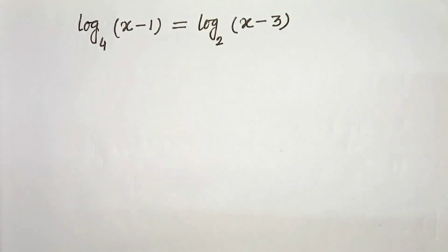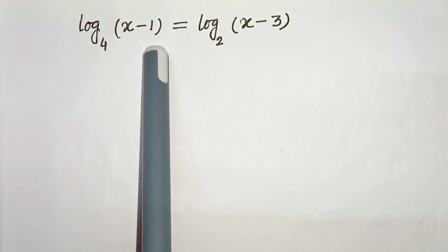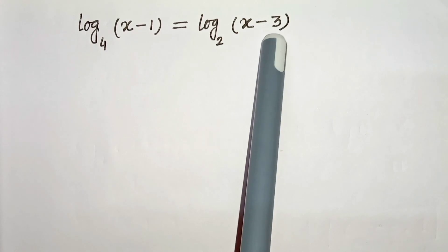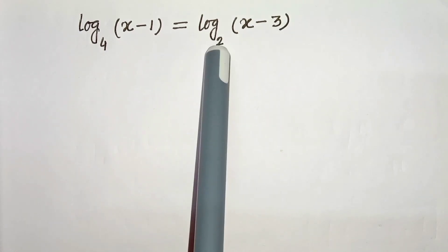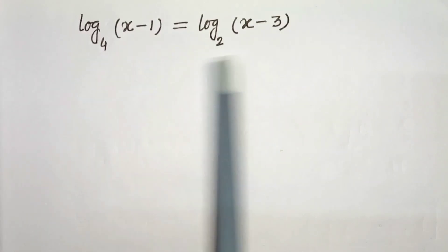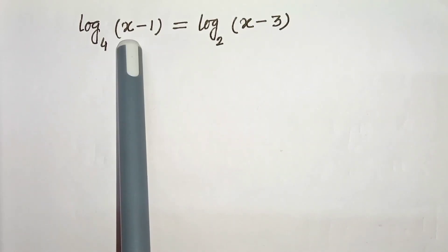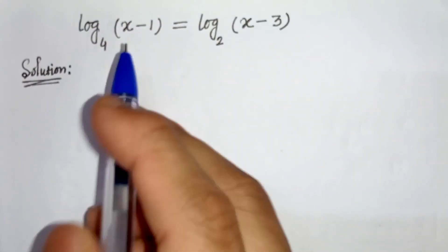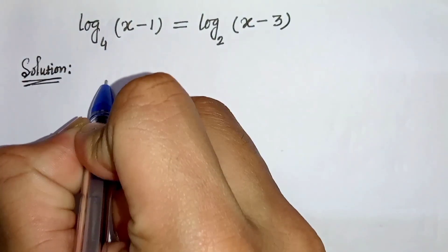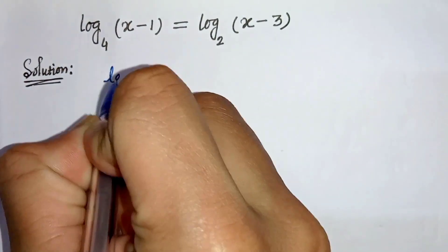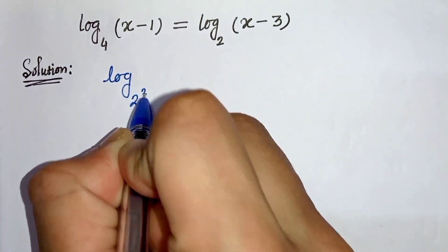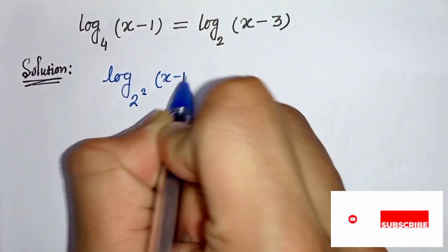Hello everyone. In this video we have log of (x minus 1) base 4 equals log of (x minus 3) base 2. We have to solve this and find the value of x. So let's start. First of all, we can write log of (x minus 1) base 4, writing base 4 as 2 squared.